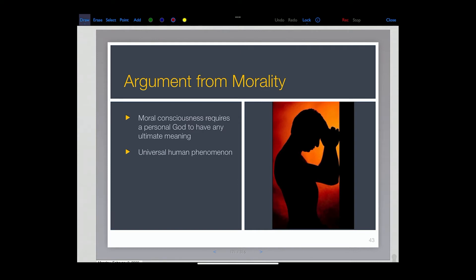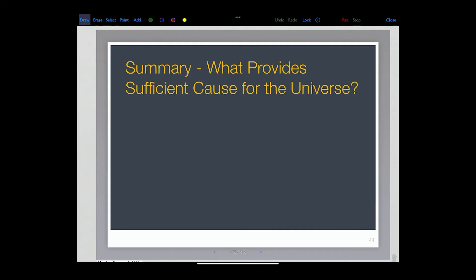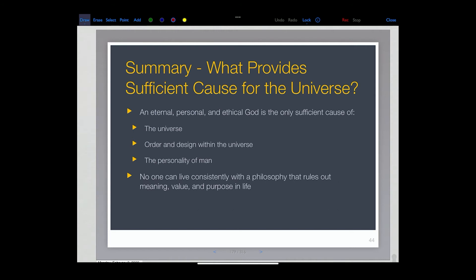And so every time you critic or praise something, why would you say that's good or bad? And so it wouldn't have any weight. So an exclusive moral foundation requires the changeless character of the personal creator. And so I just use these things, and so I say an eternal and personal God, ethical God, is the only sufficient cause of the universe, of order and design within the universe, of the personality of man, and also that no one can live consistently with a philosophy that rules out meaning and value and purpose.